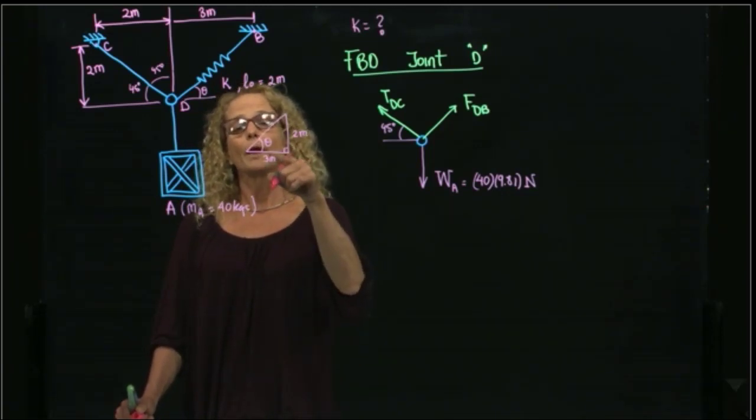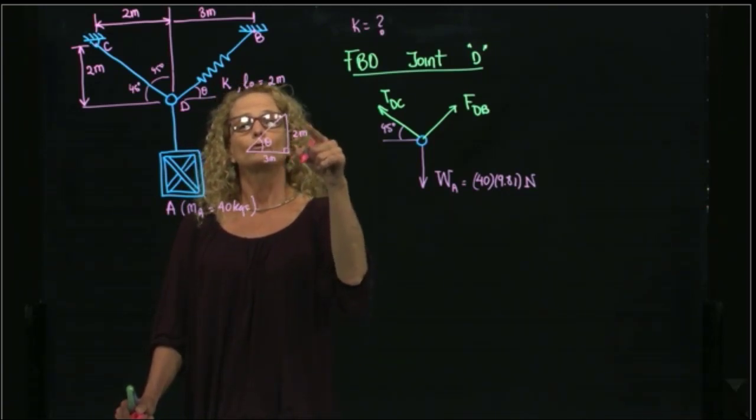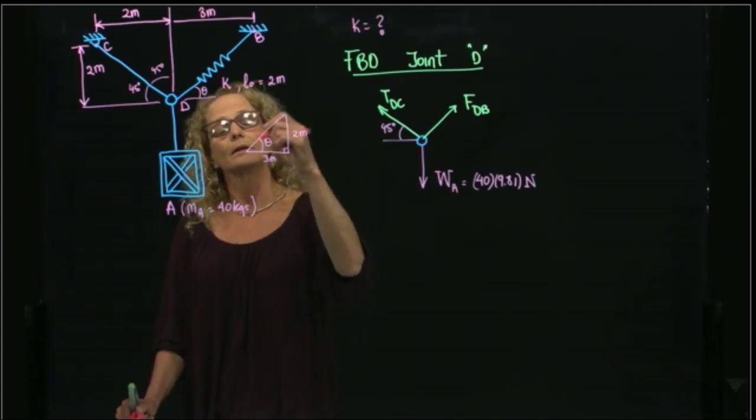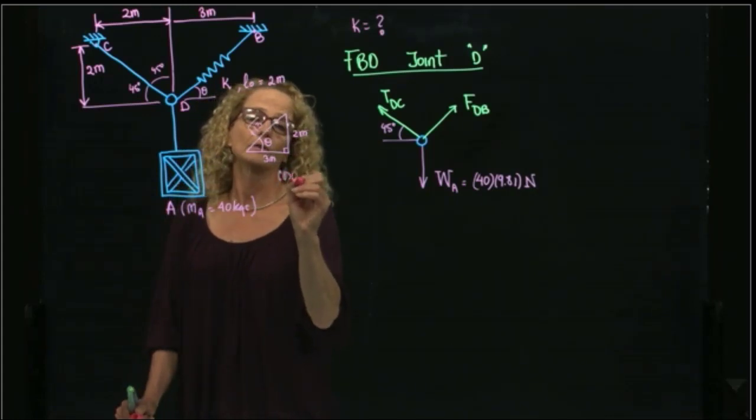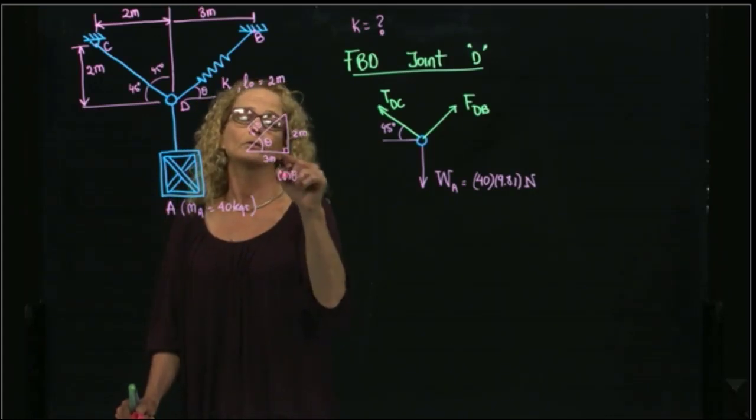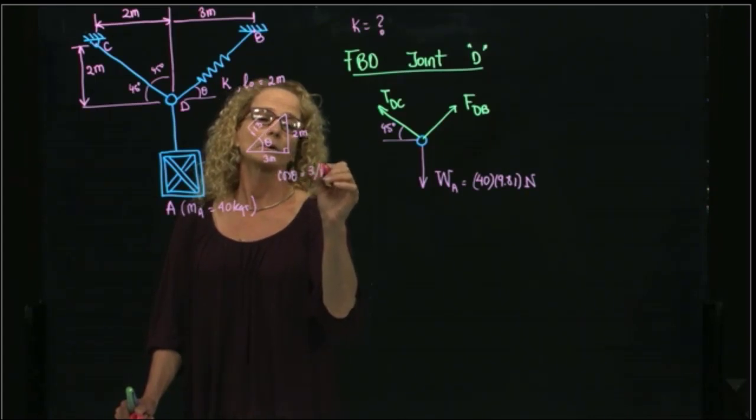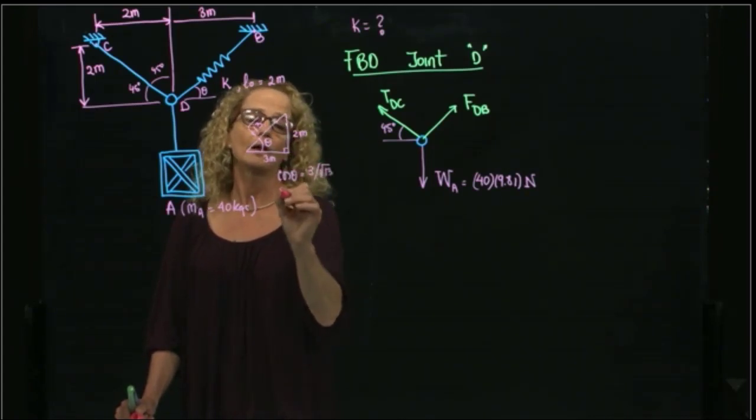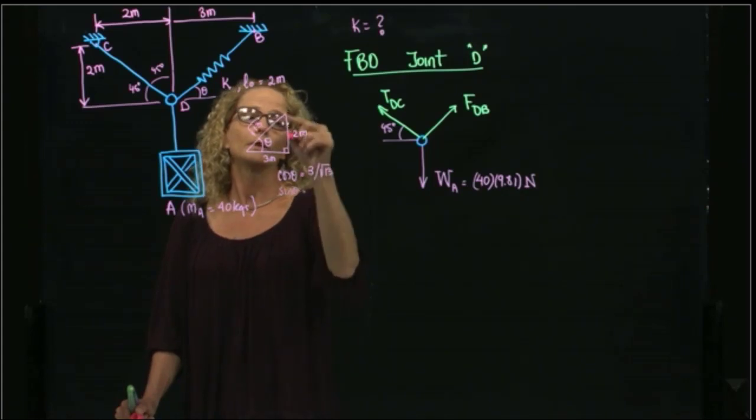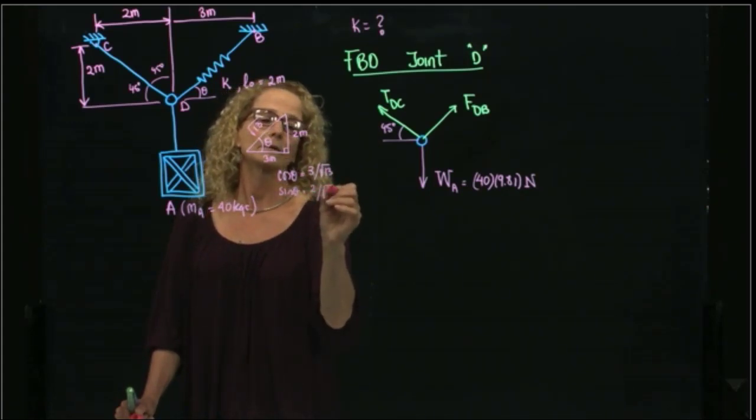This length using Pythagoras, because this is a right triangle. That will be 3 squared, which is 9, plus 2 squared, which is 4. That will be the square root of 13. So I can just say that the cosine of this angle will be equals to the adjacent over square root of 13. And then sine of the angle will be the opposite divided by the square root of 13.